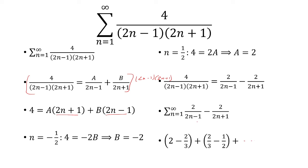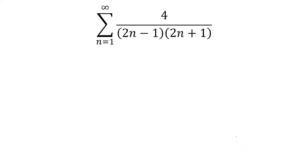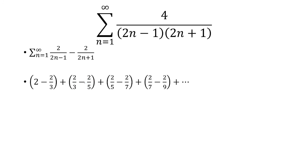So this is part of it. When n equals 1, we have 2 minus 2 thirds. And when n equals 2, we have 2 thirds minus 2 fifths. Continuing, when n equals 3, we have 2 fifths minus 2 sevenths. When n equals 4, we have 2 sevenths minus 2 ninths.